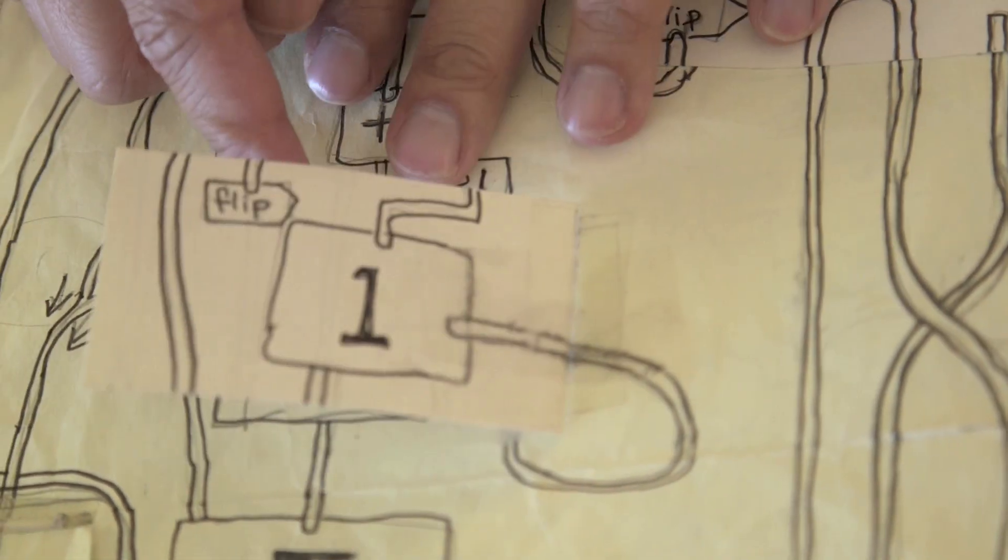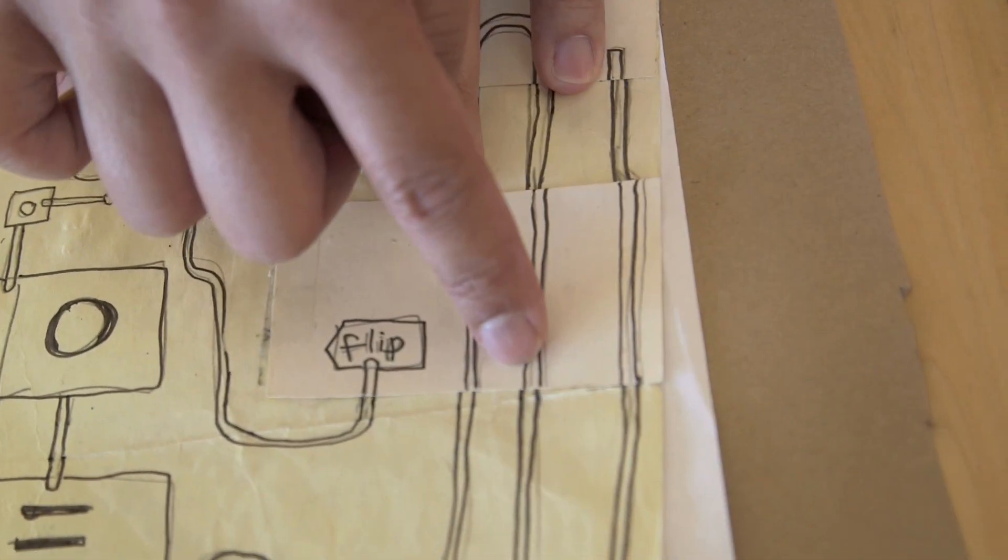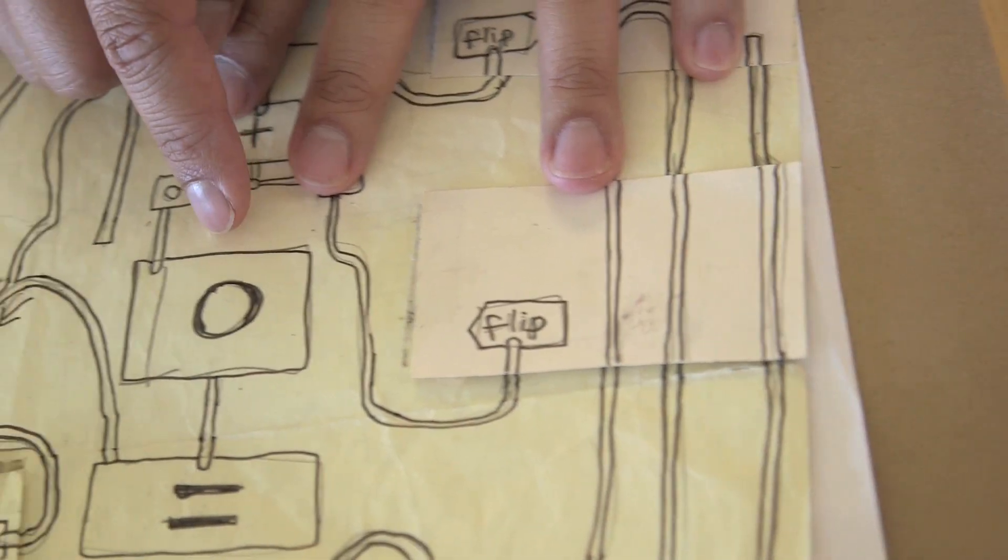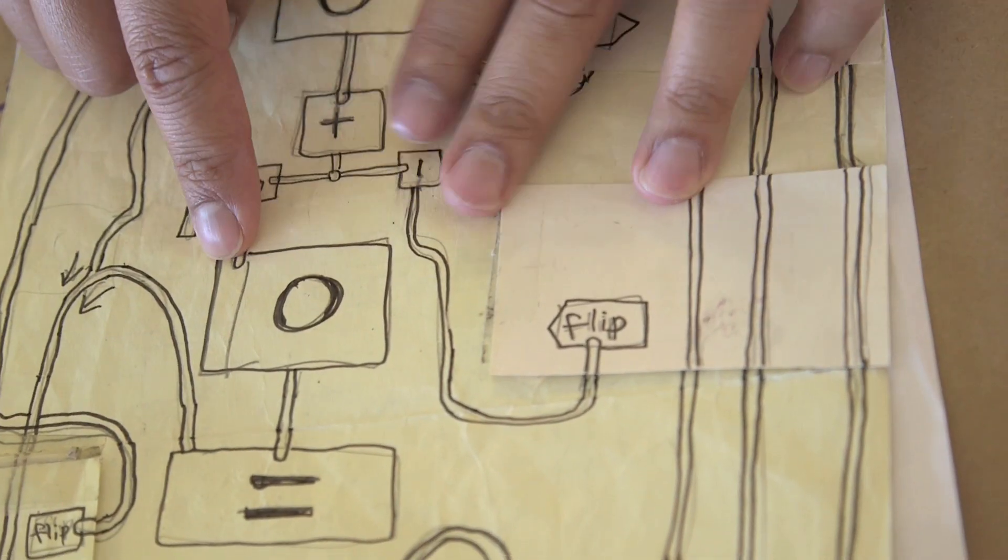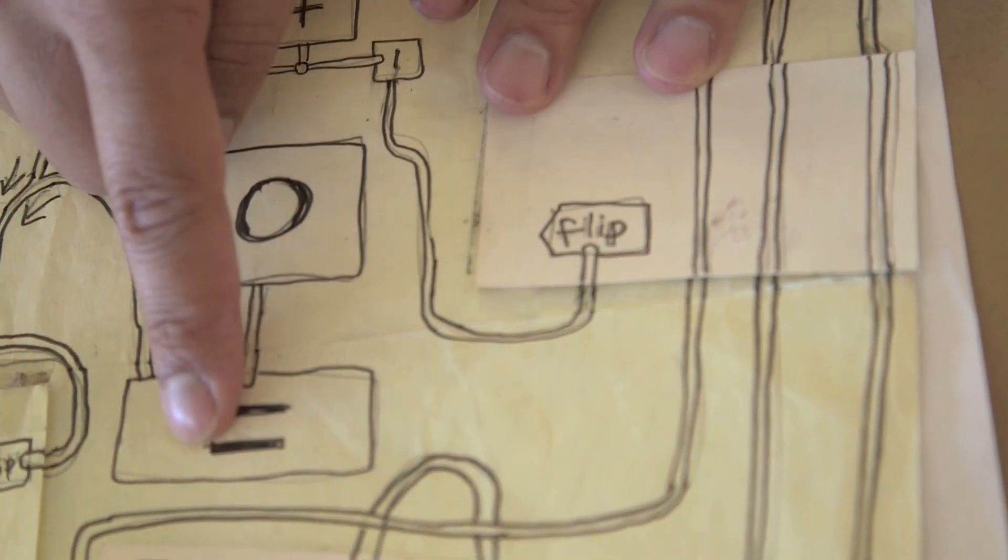You'll notice when you flip these flaps, they can either connect or block off certain pathways later on. So that's basically how it all works.